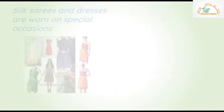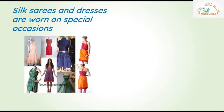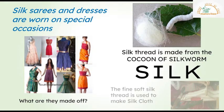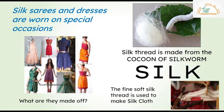How about the beautiful silk sarees, dresses, and scarves worn by people for special occasions? What are they made of? Yes, we get silk thread from the cocoon of silkworms. It is a fine, soft thread and is used to make silk cloth.